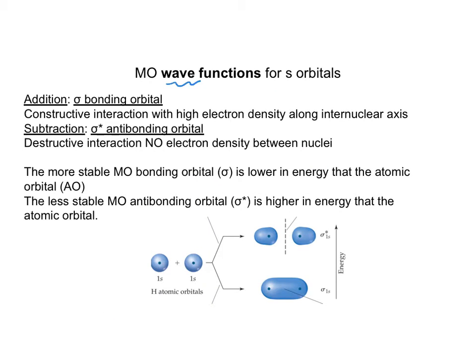We go back to that picture where it was a round sphere, but you now know it's a probability distribution function. There are two different ways these wave functions can combine. They can add, and when they add, they form what's called a sigma bonding orbital. There is constructive interaction with high electron density. Where that line goes, high electron density, and that gives us a bond.